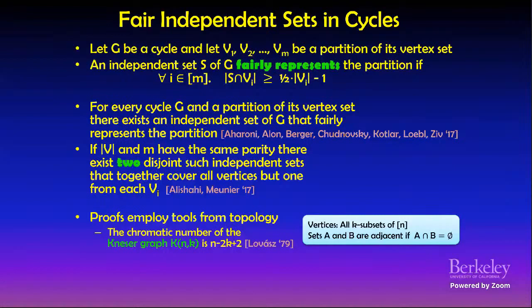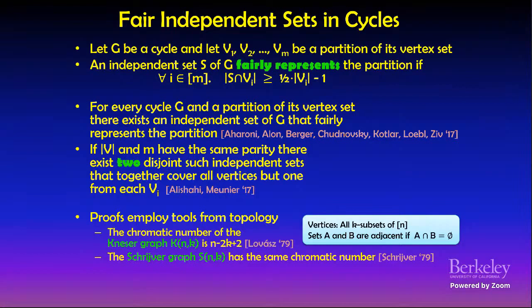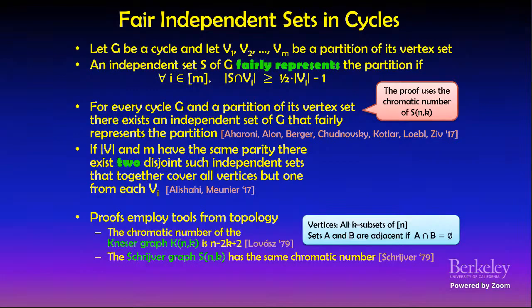Although the statements of these results are purely combinatorial, their proofs are based on tools from topology. The first application of topology in combinatorics was obtained in 1979 by Lovász, who proved that the chromatic number of the Kneser graph with parameters n and k is n minus 2k plus 2, where vertices are all k-subsets of {1,...,n} and two sets are adjacent if they are disjoint. Lovász used the Borsuk-Ulam theorem from algebraic topology to precisely determine this chromatic number.